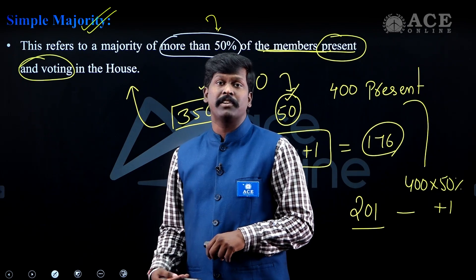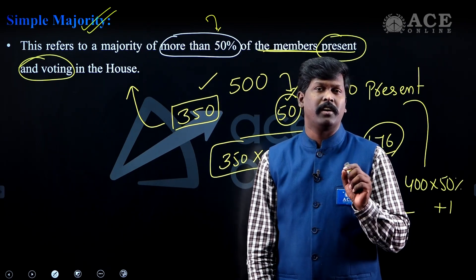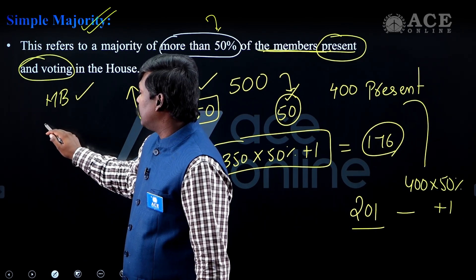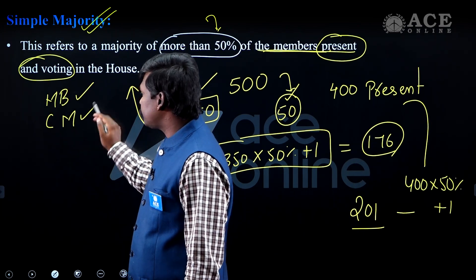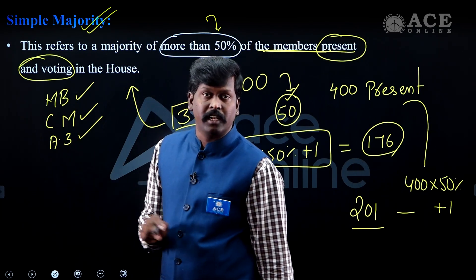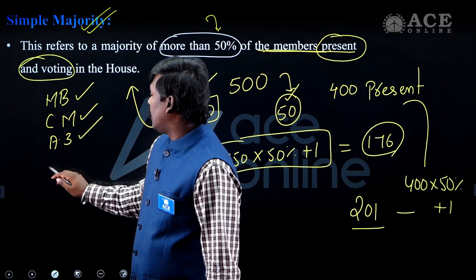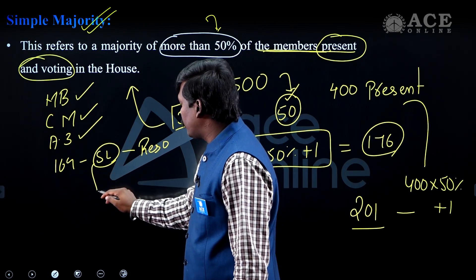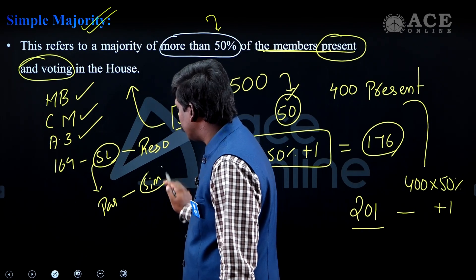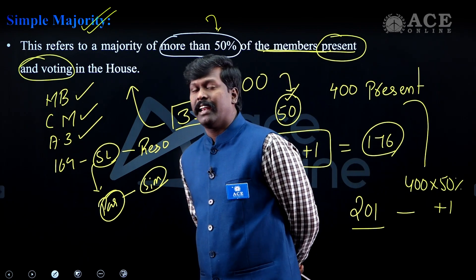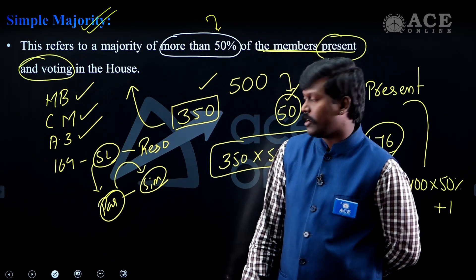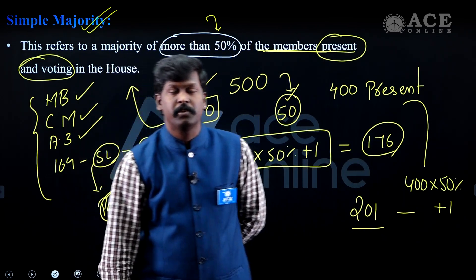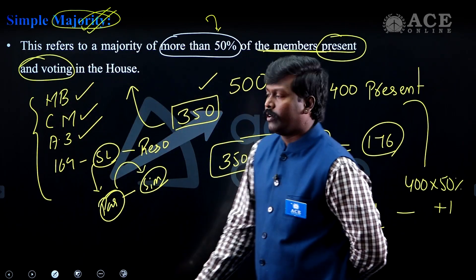Simple majority applies to passing ordinary bills, censure motions, adjournment motions, call-attention motions, and privilege motions. Article 3 on state reorganization and Article 169 — a resolution passed by the state legislature to create or abolish the state legislative council — both require simple majority.